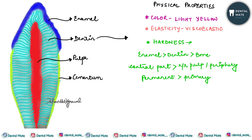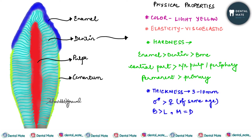Regarding the thickness of dentine, the average thickness is about 3 to 10 millimeters. It is greater in males of the same age compared to females, more on the buccal surface compared to the lingual surface, and approximately the same on the mesial and distal surfaces.